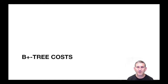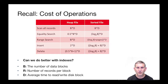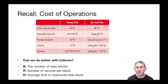Let's return to the idea of a cost model for file organization access, and let's add B+ trees into our analysis. You'll recall the cost of operations for heap files and sorted files. We sort of promised earlier that if we introduced indexes, we would have an even more attractive alternative. So let's see if we actually did better.